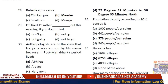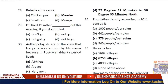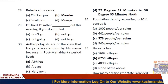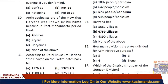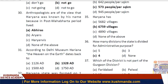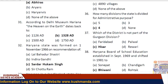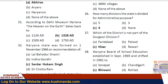Question 34: Population density according to the 2011 census is 573 people per square kilometer. Question 35: Haryana has 6,789 villages. Question 36: For administrative purposes, the state was earlier divided into four divisions — but now there are six.